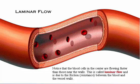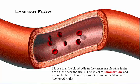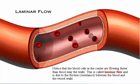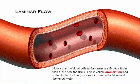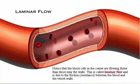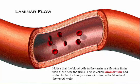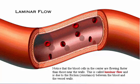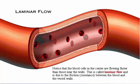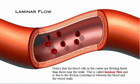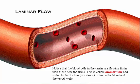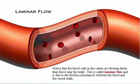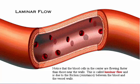Notice that the blood cells in the center of the vessel are flowing faster than those near the walls. This is called laminar flow and is due to the friction — the resistance — between the blood and the vessel walls.